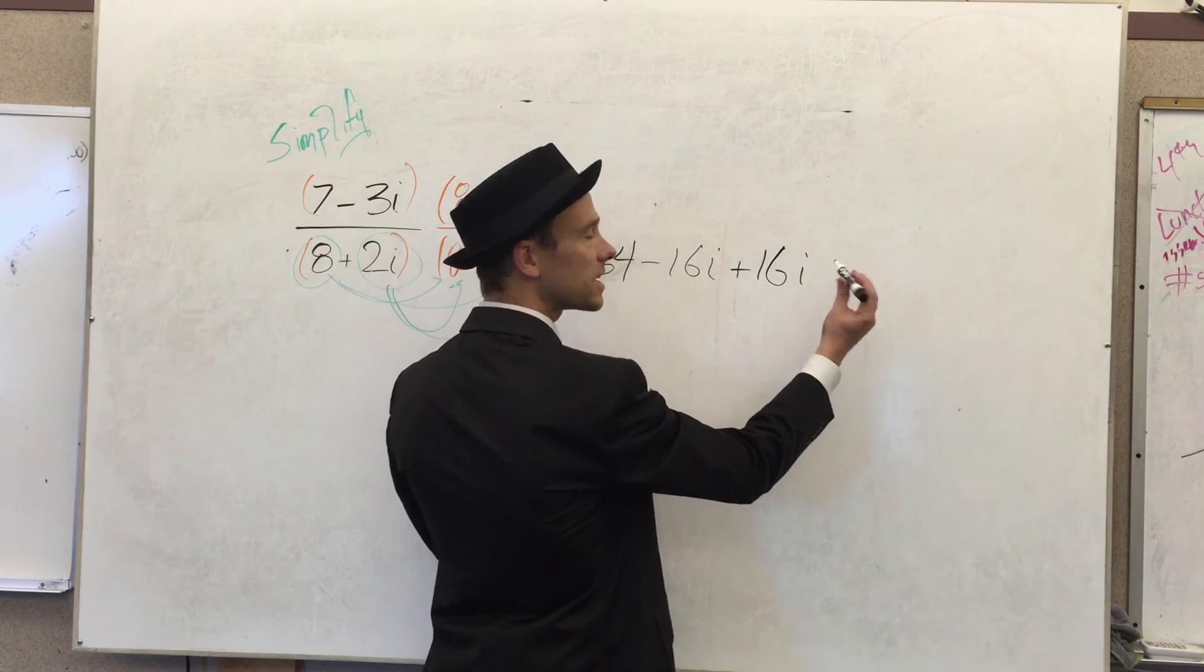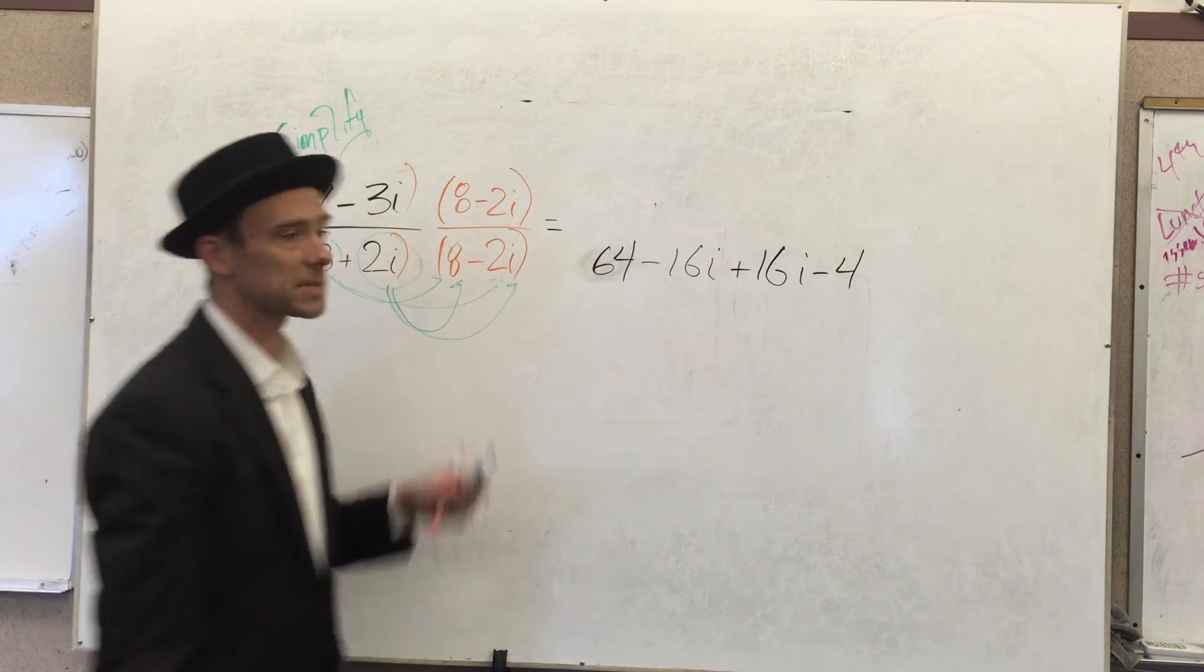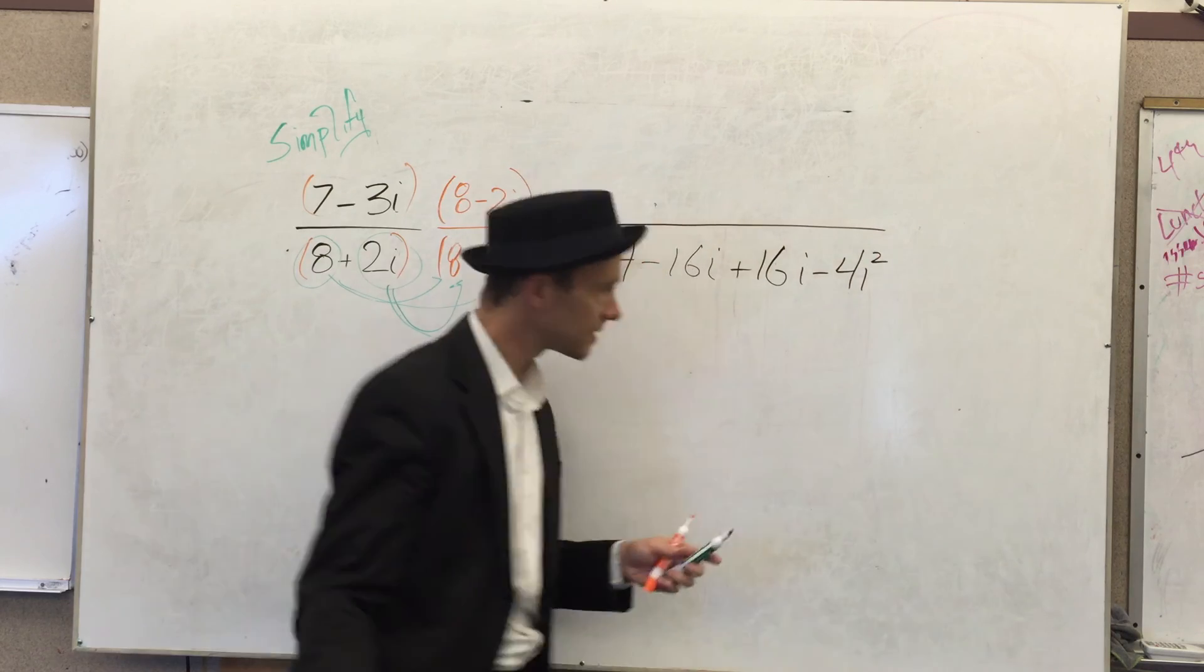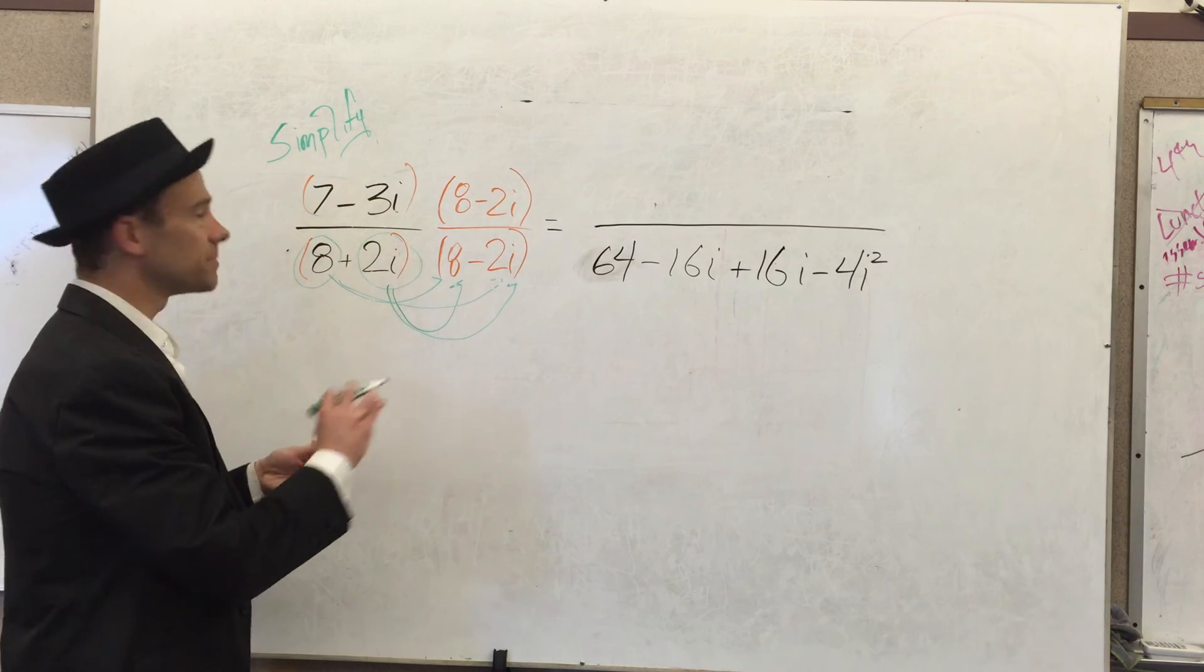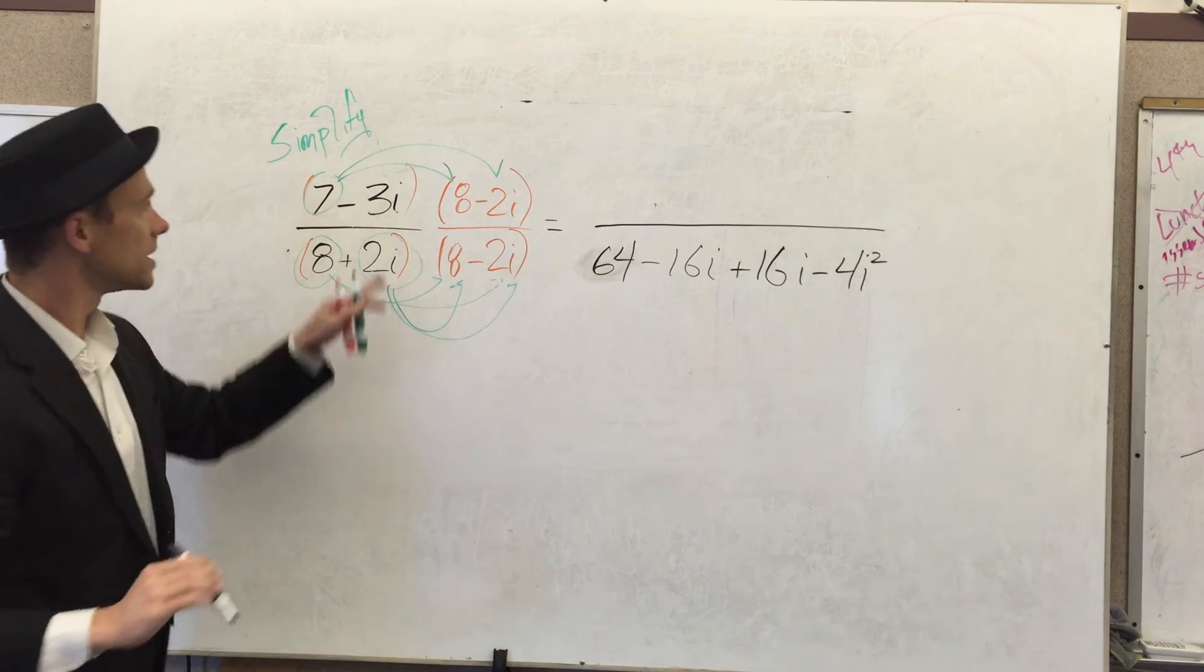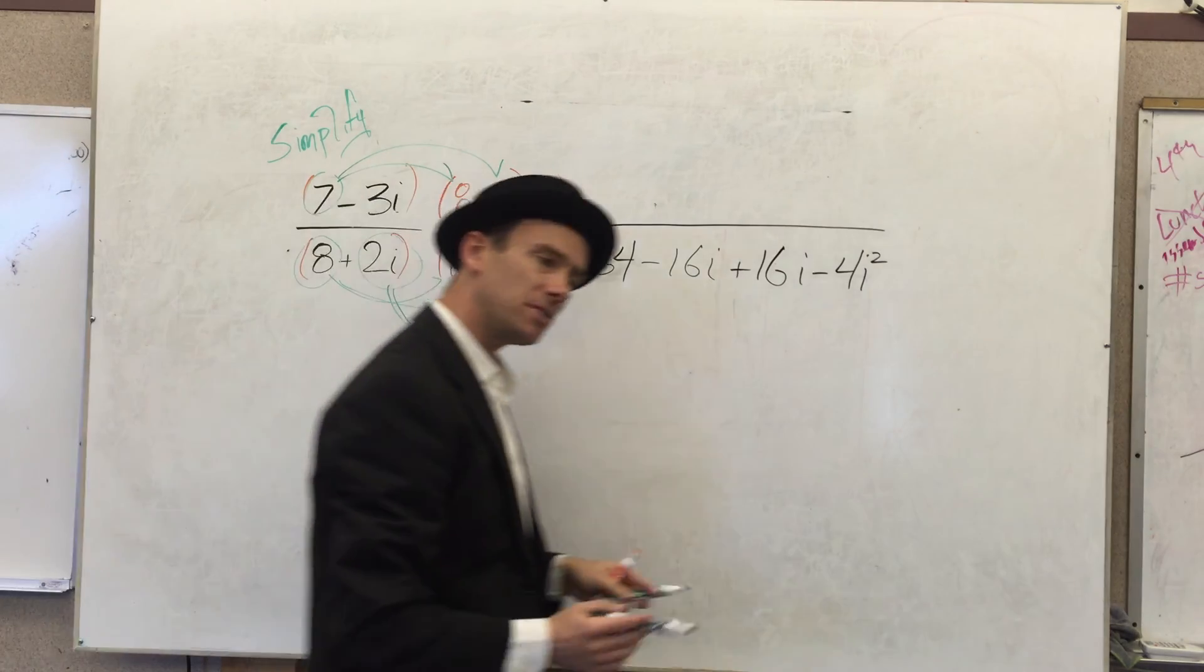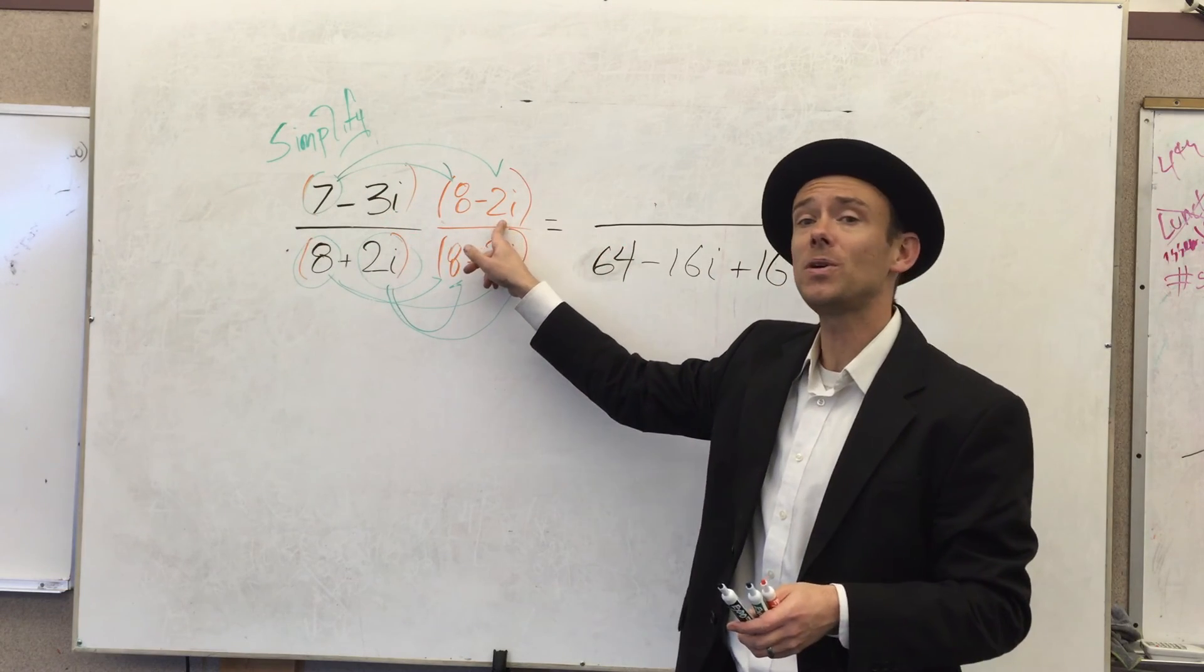Let's see, so positive 2 times a minus 2 or negative 2 gives you minus 4. i times i gives you i squared. Alright, let's go to the top. Do the same thing, maybe just slightly more at a quicker pace.